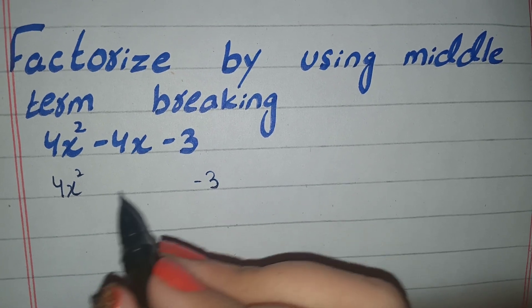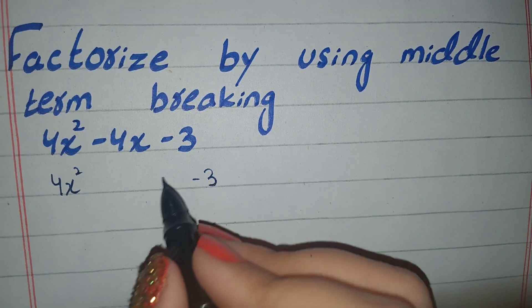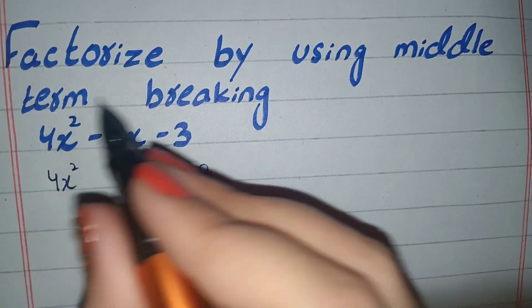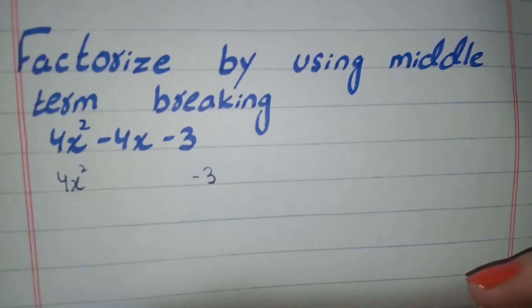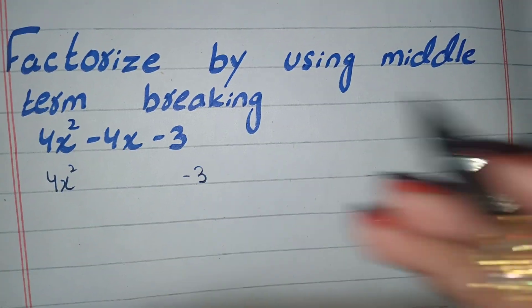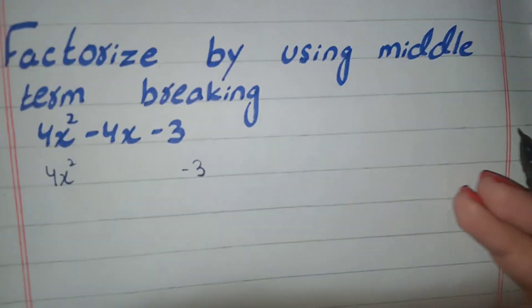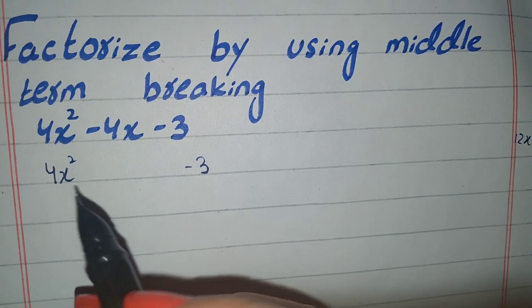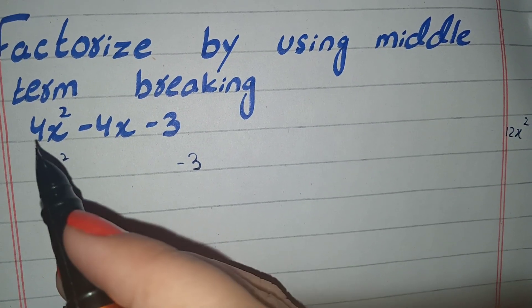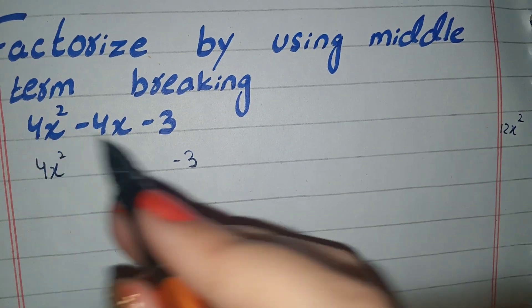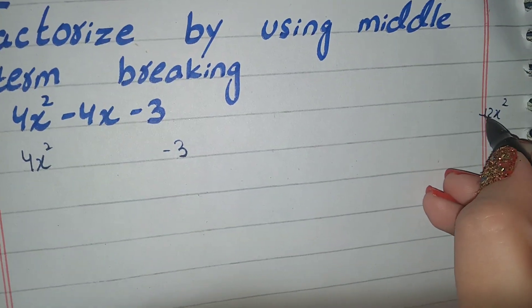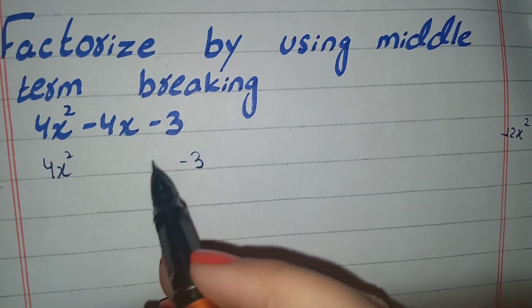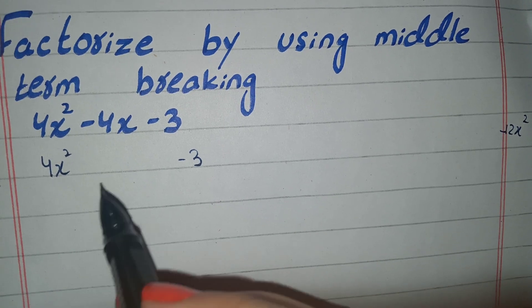We have to multiply them. So 4 into 3 is 12, and we have to multiply between them — we have 12x squared. We need to find factors of 12x squared.